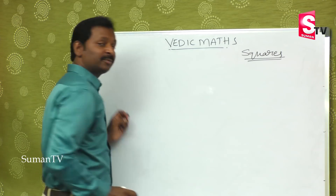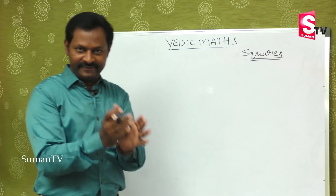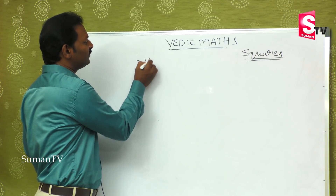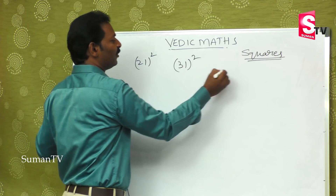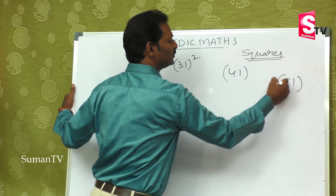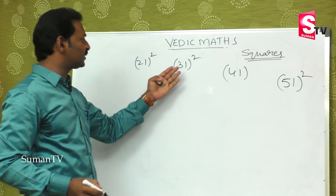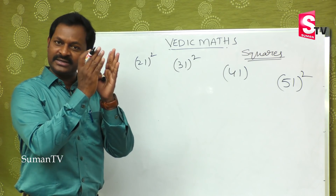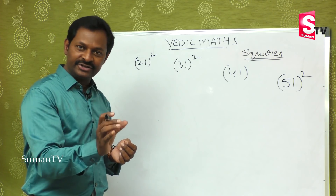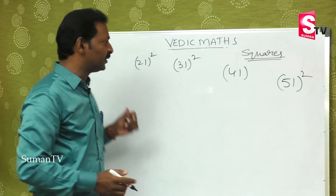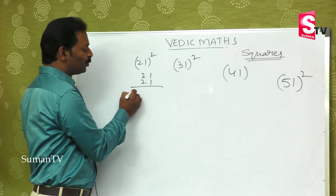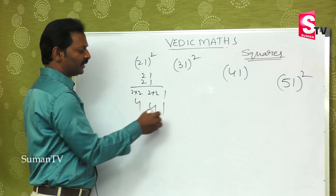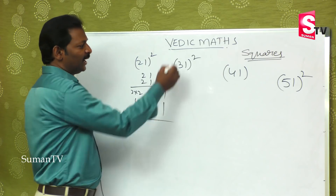Now for numbers ending with 1 — like 21, 31, 41, or 51 — these are the reverses of 11, 12, 13, 14, 15, 16, 17, 18, 19. For 21-square: first multiplication, then addition, then 1 at the end. So 21 into 21: first two into two is four, then two plus two is four, then one — giving 4, 4, 1.